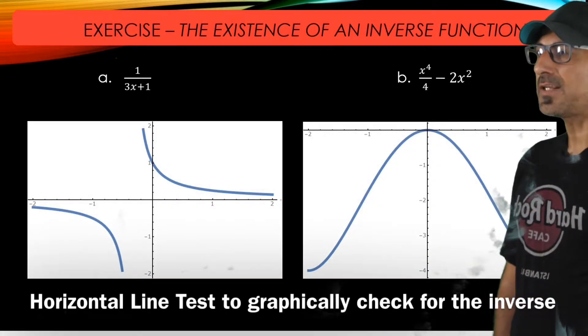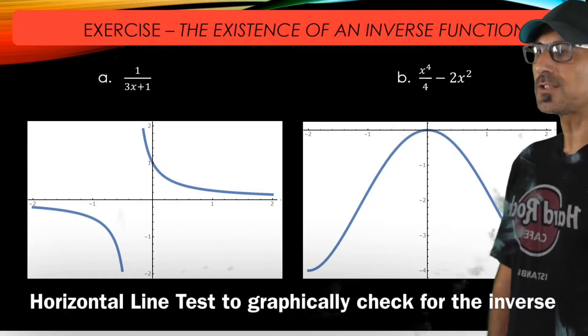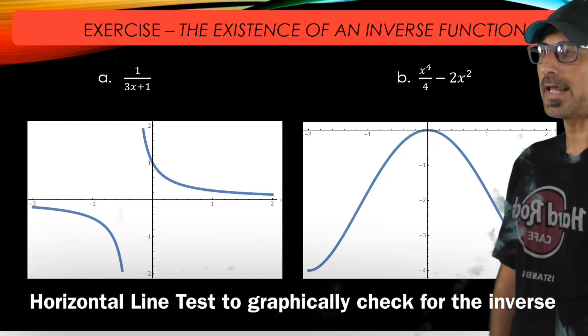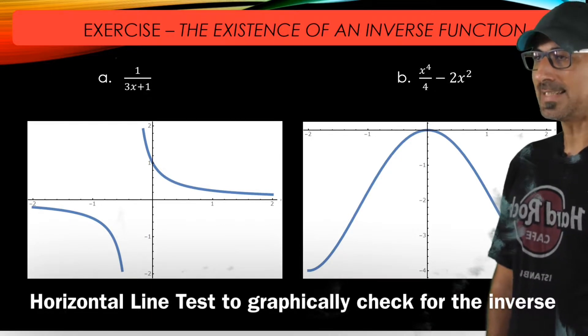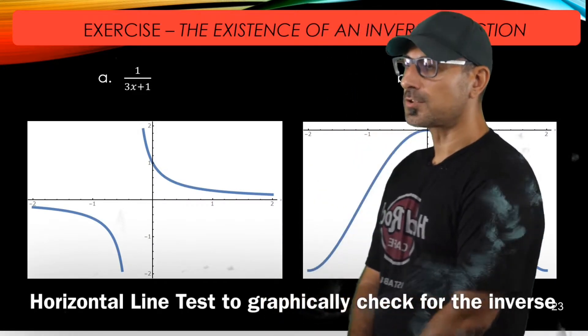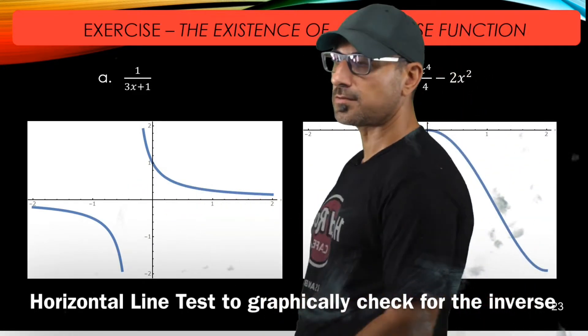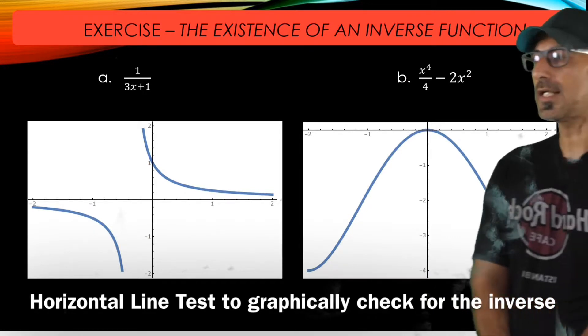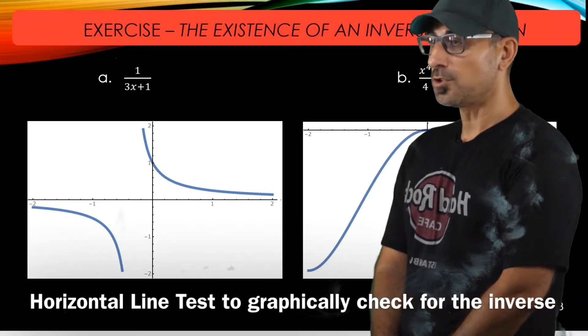And here is the graphical outlook of each function. So we can also check the existence of an inverse function by what's called the horizontal line test. And what that means is that you're going to sketch horizontal lines at different locations of the graph, and then those lines should intercept the graph at most one point.